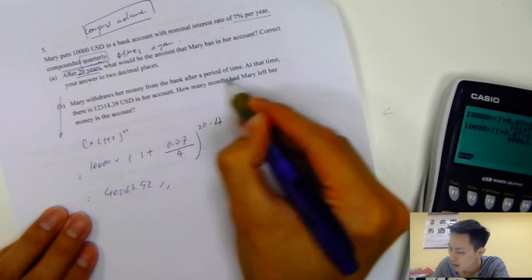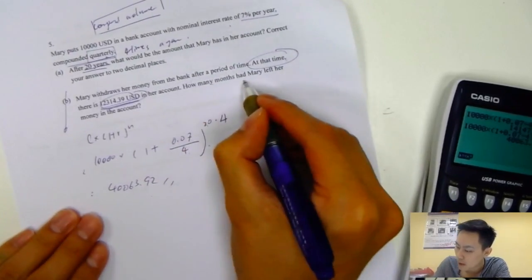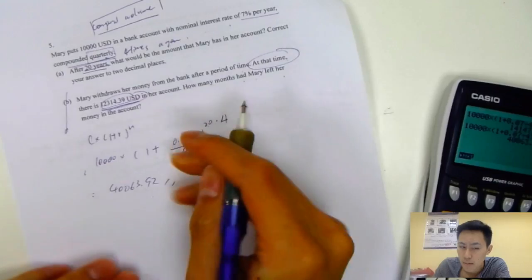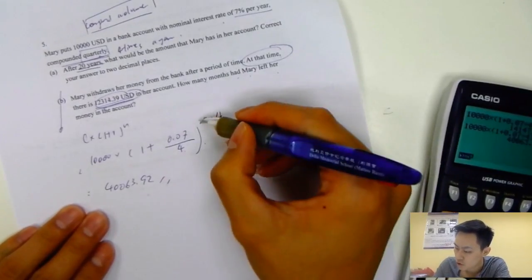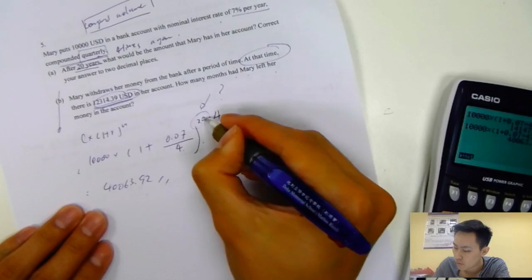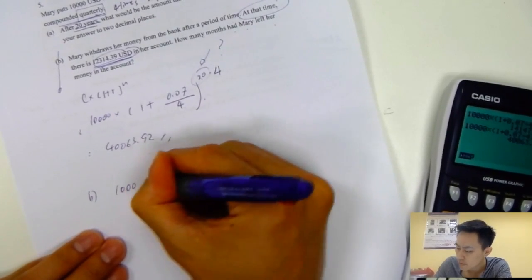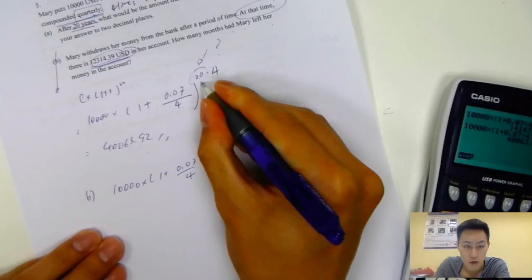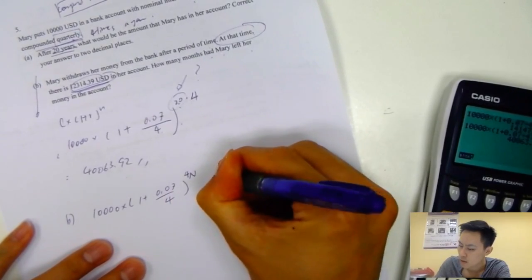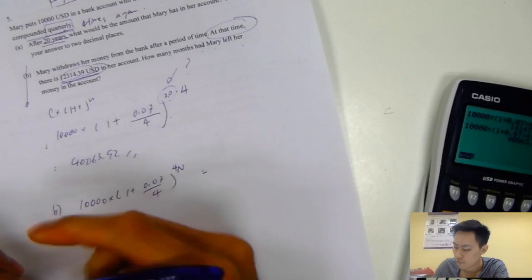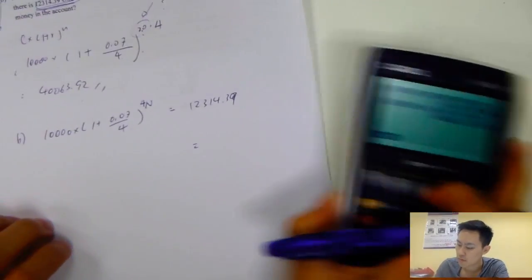Mary withdraws her money from the bank after a period of time. At that time, she got 12,314.39 left. How many months had Mary left her money in the account? We just apply the same thing. This time, the unknown value would be the number of years. We're not sure about the number of years, but we still know it will compound 4 times a year. For question B, write all the same. Replace number of years because I don't know what time. Let the number of years be n here. Then 4n equals to, why is it 4n? Because 1 year 4 times.